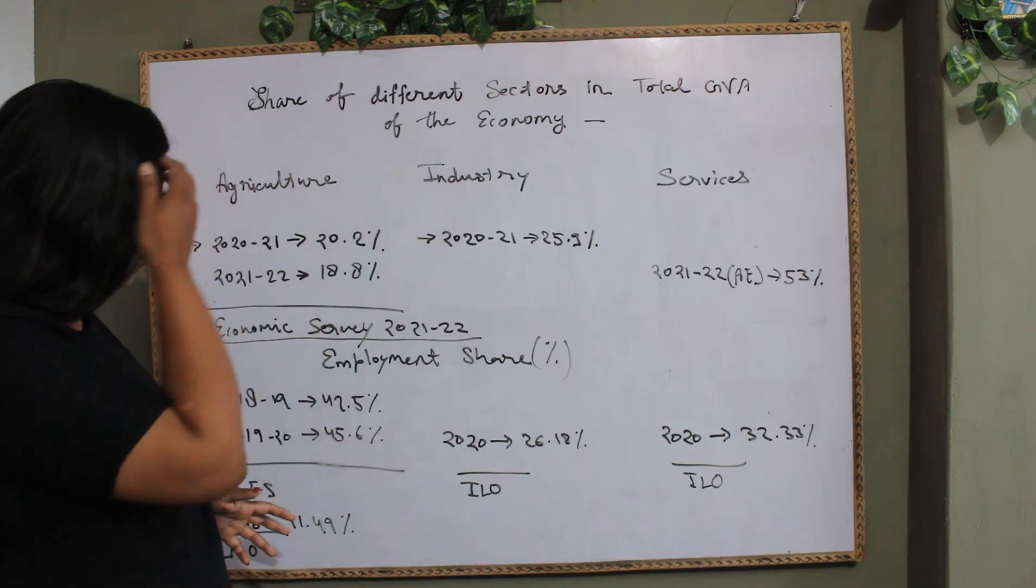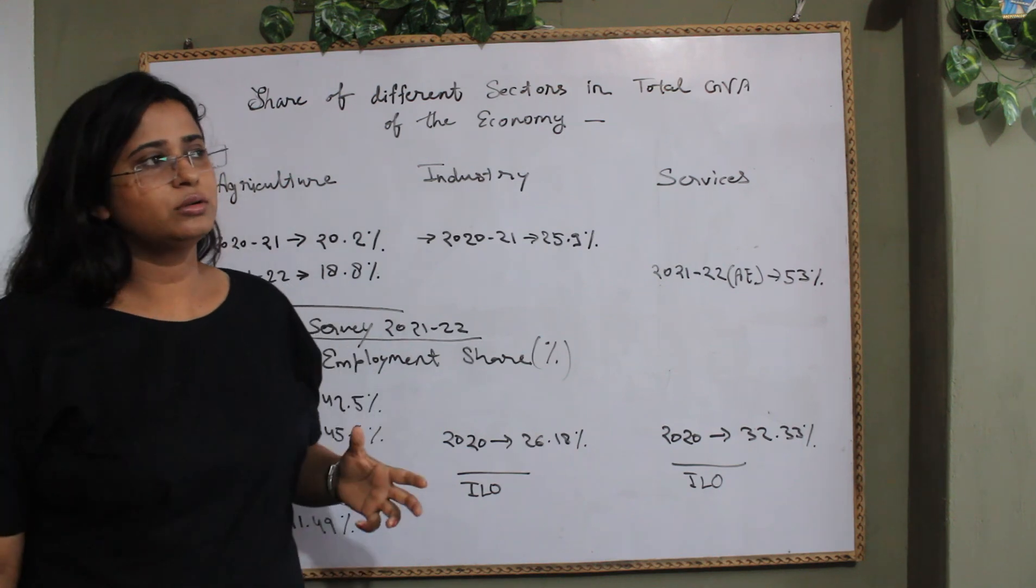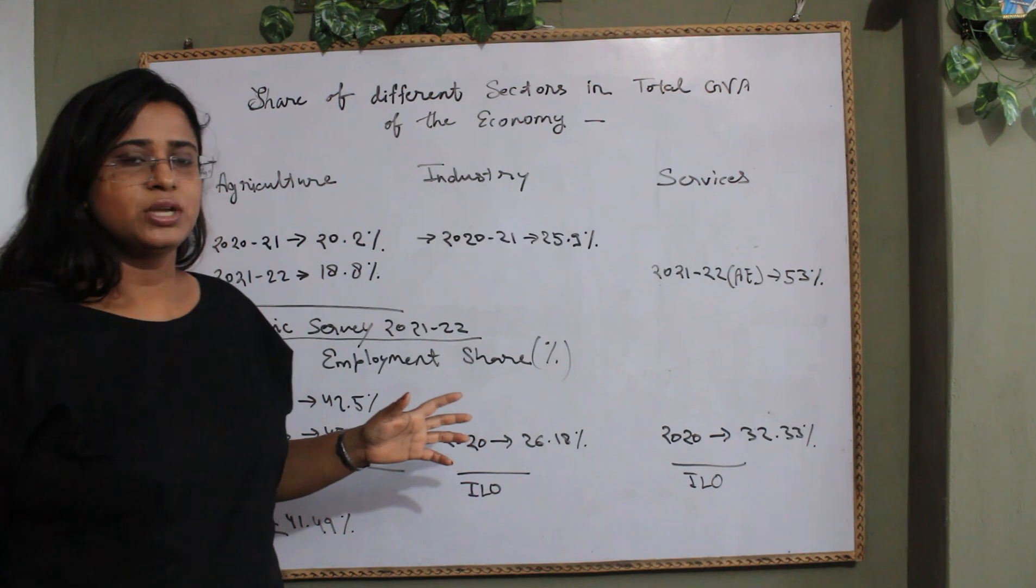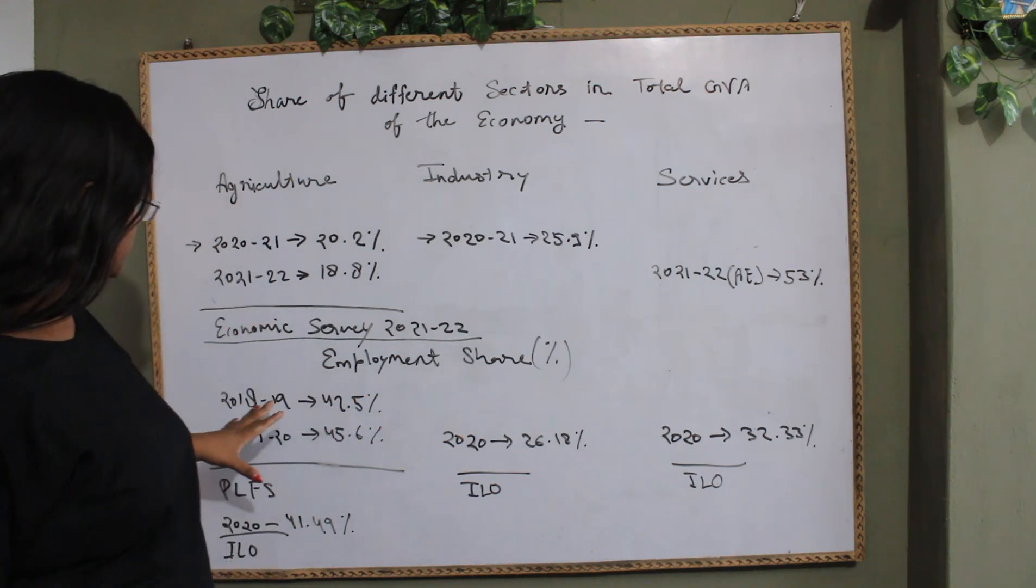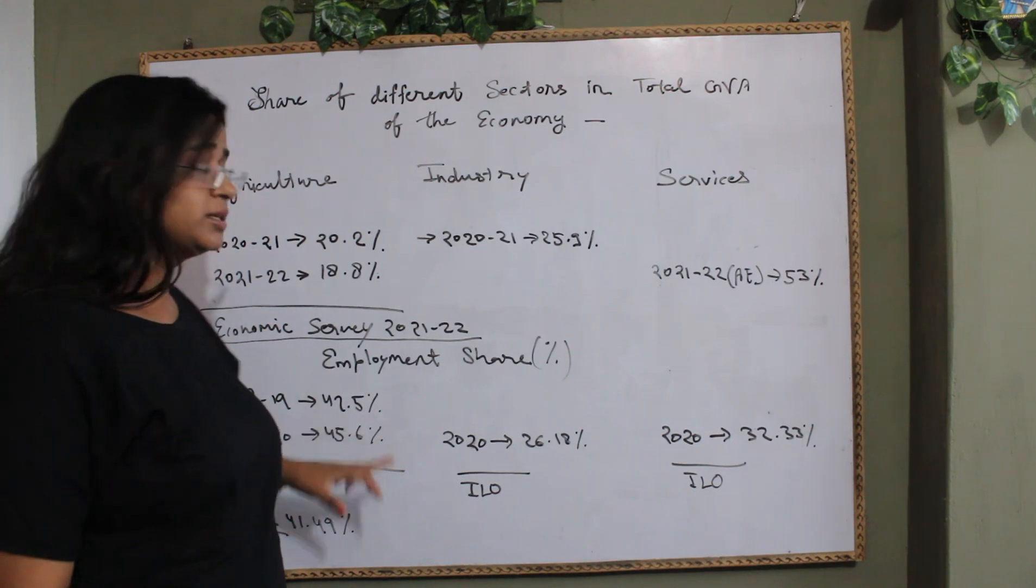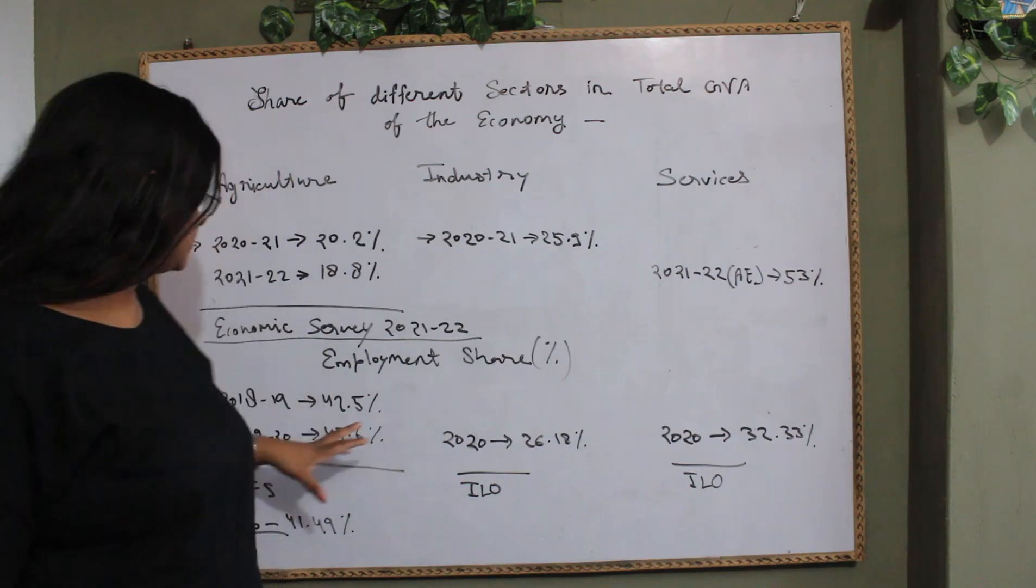Now we will go through the employment generation or the labor force that are working in these three sectors. In the agricultural sector, you can see in 18-19, 42.5% of total labor force were working in the agricultural sector.